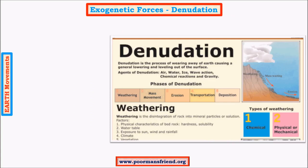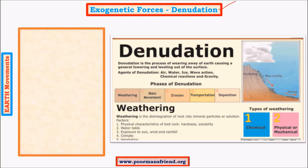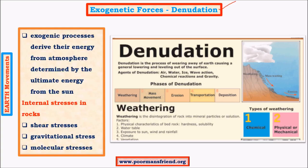We are finished talking about endogenetic forces — the forces acting within the earth's crust. Now we move on to exogenetic forces, acting above the earth's crust. For our study of exogenetic forces, we need to know the term denudation, which involves all three processes of weathering, erosion, and deposition. Exogenetic processes derive their energy from the atmosphere, and the ultimate source is the Sun.